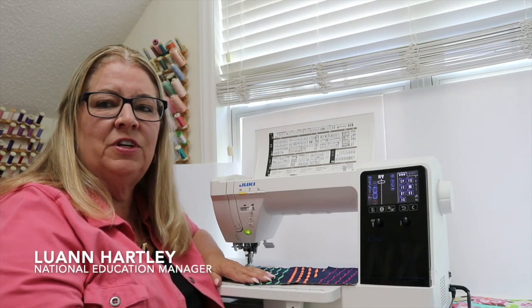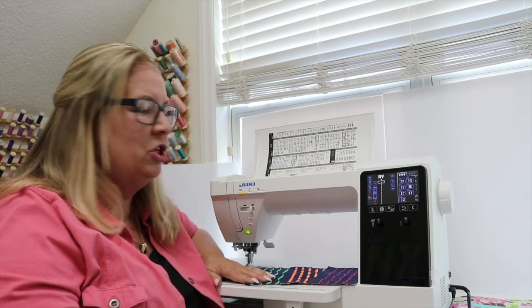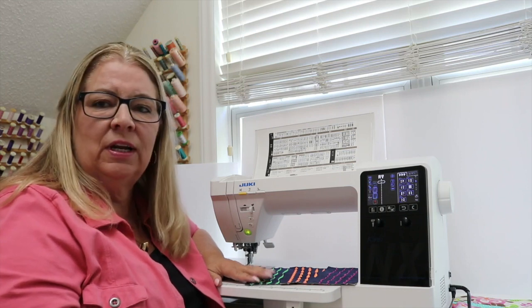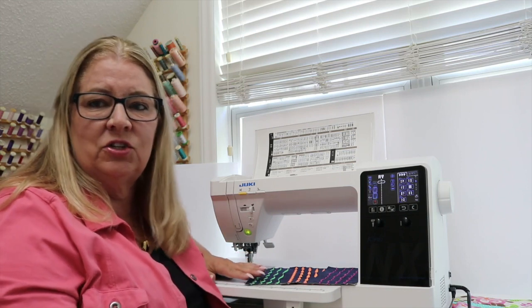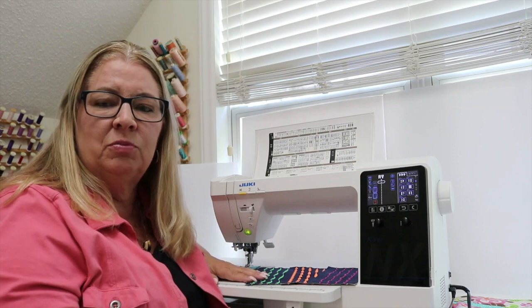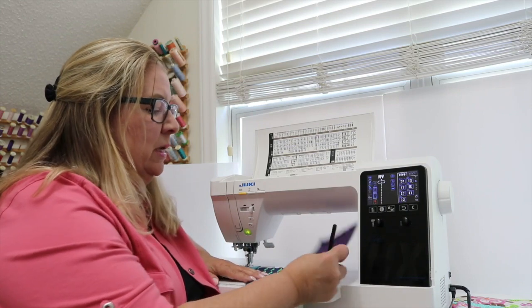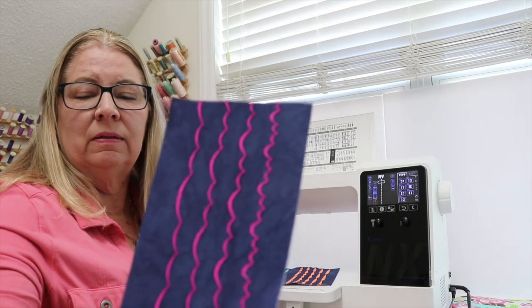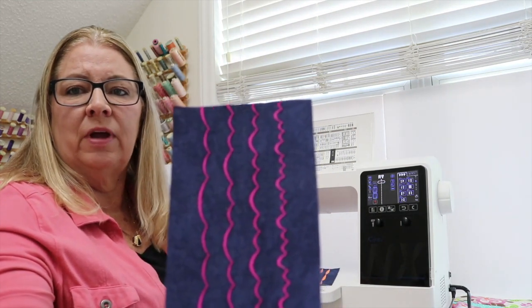Elongation of stitches is a feature found on many of our Juki machines. It allows you to take certain satin stitches built into the machine and make them up to five times their original length. Here's a sample.